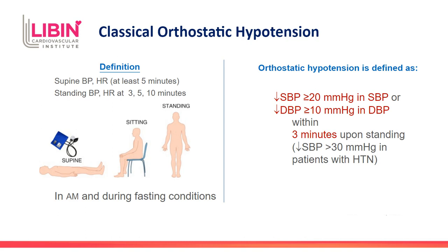Orthostatic hypotension is defined as a drop in blood pressure of 20 millimeters of mercury in systolic pressure or 10 millimeters in diastolic pressure. For classical orthostatic hypotension, this has to occur within three minutes of standing. There is a caveat that if someone has baseline hypertension, the threshold is a little bit higher — a drop of at least 30 millimeters of mercury is required.